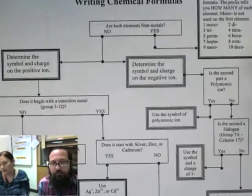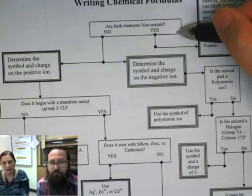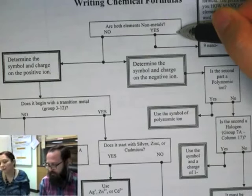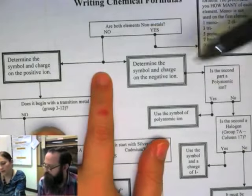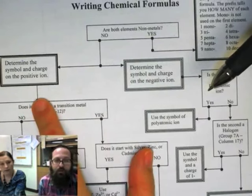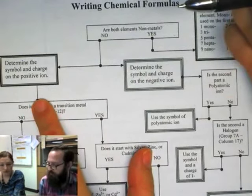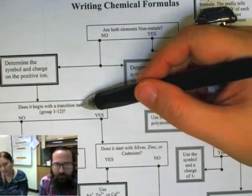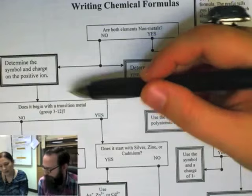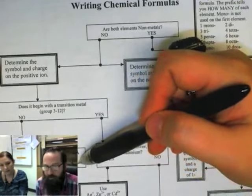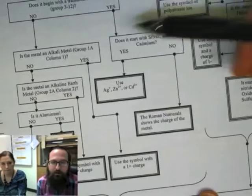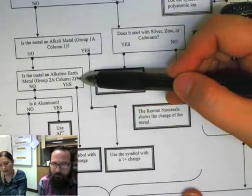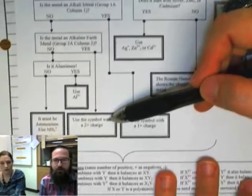So if I have a flow chart, here's the first question: are both elements non-metals? So no. How do I know that again? Because one is on the left side of the periodic table, one's on the right side. So next step is to determine the charge on the positive ion. I did that because it was magnesium plus two. So is it a transition metal? No, because it's not groups three through twelve. It was in group two. Is the metal an alkali metal? No, it's not in group one A. Is it an alkaline earth metal? It is, it's in group two. So we can use the two plus charge.